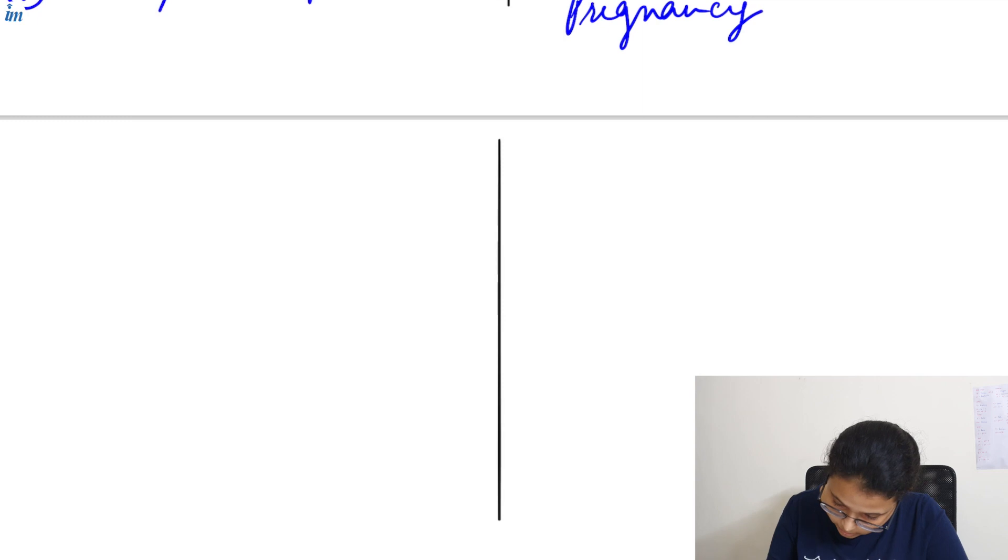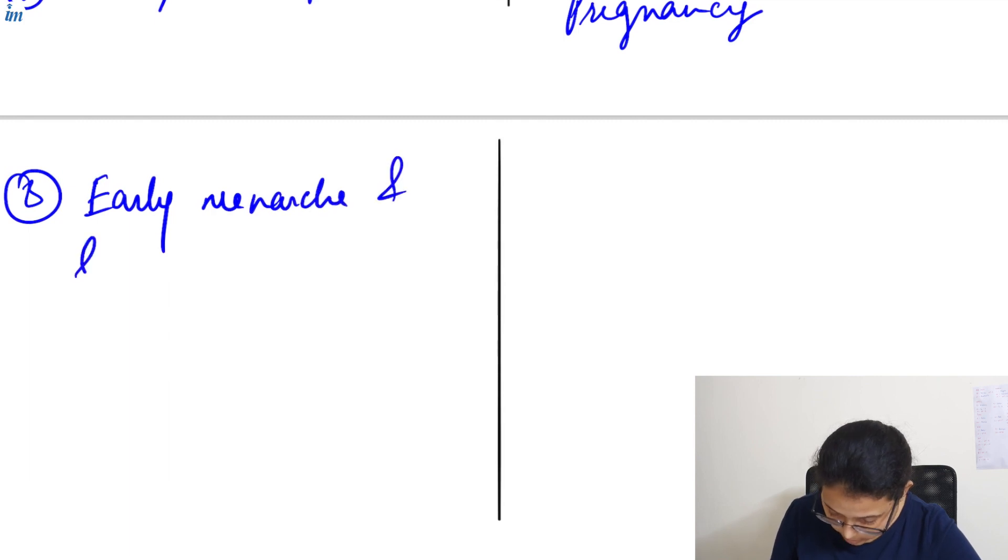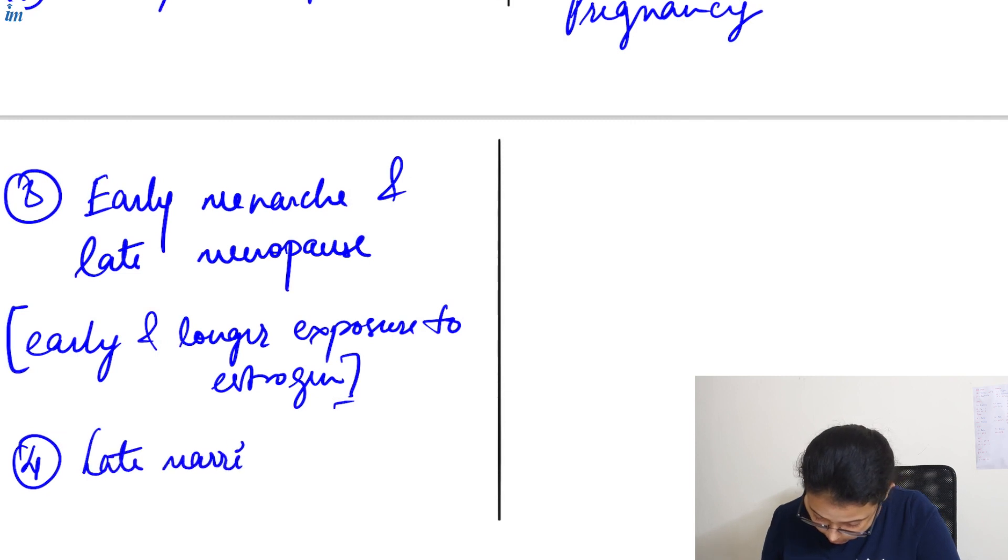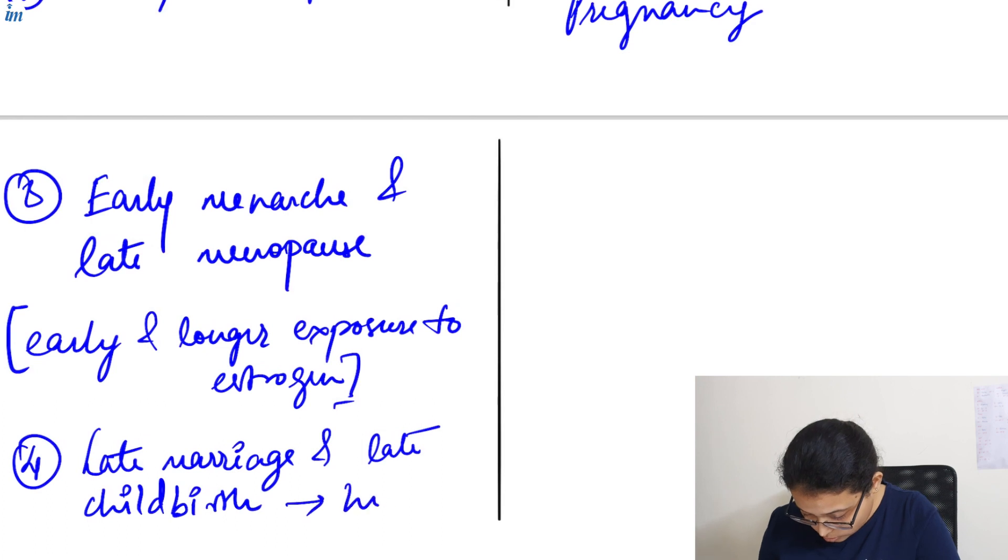Now, the third risk factor is early menarche and late menopause. Now, due to early menarche and late menopause, these females are exposed to estrogen for a longer period of time. So, there is early and long exposure to estrogen in these females. And the last one is late marriage and late childbirth, which is usually seen in high socioeconomic status. So this is more common in high socioeconomic groups.